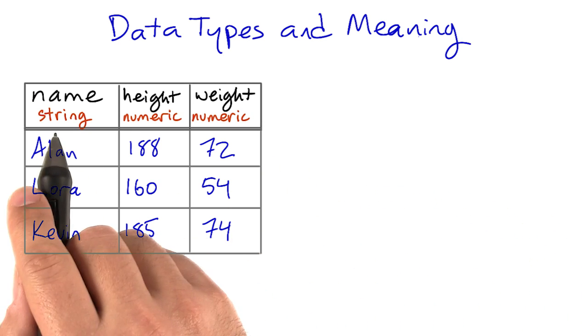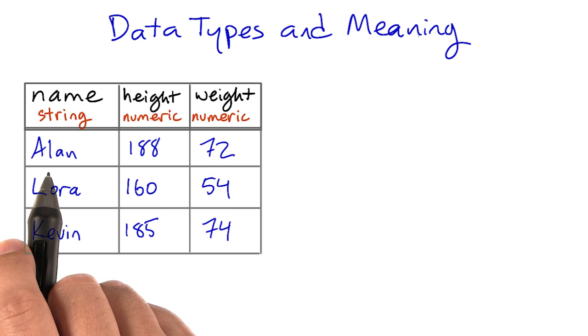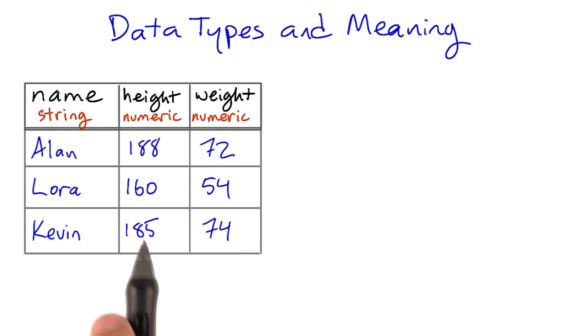As programmers, we're familiar with the idea of data types. A string, like Allen, is a different type from a numerical value like 188.